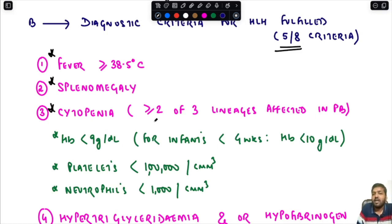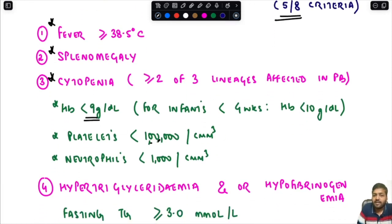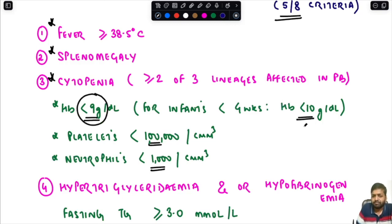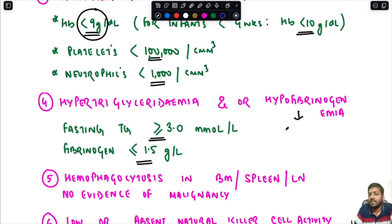The eight criteria are: (1) fever ≥38.5°C; (2) splenomegaly; (3) cytopenia affecting two or more cell lines — hemoglobin less than 9 g/dL, platelets less than 100,000, or neutrophils less than 1,000 per cubic millimeter (for infants under four weeks, hemoglobin threshold is 10 g/dL); (4) hypertriglyceridemia and/or hypofibrinogenemia — fasting triglycerides ≥3 mmol/L and fibrinogen ≤1.5 g/L, indicative of consumptive coagulopathy similar to DIC.